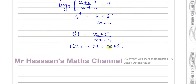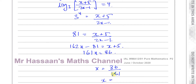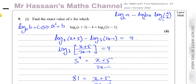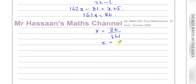Taking away x from both sides gives 161x, and adding 81 to both sides gives 5 plus 81, which is 86. So x equals 86 over 161. Does that simplify? Well, 86 over 161 stays as it is — it doesn't simplify any further.